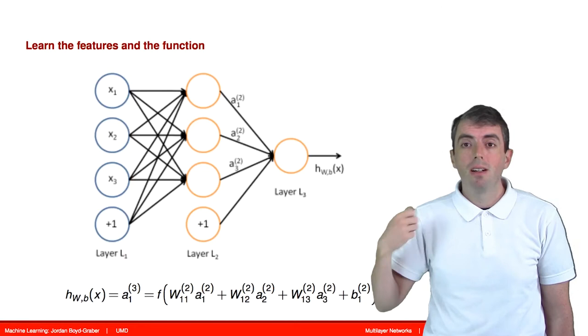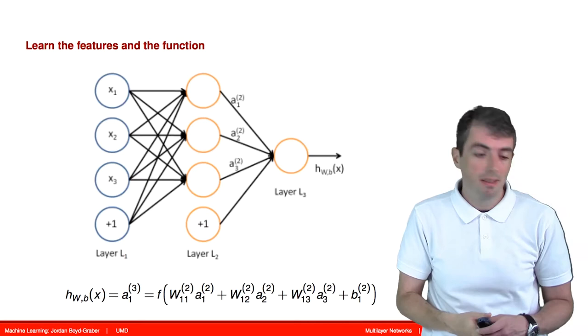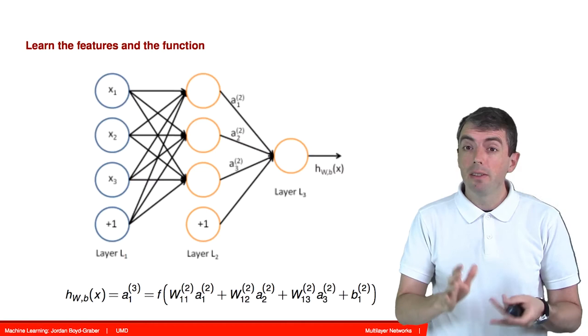Now you have basically created a logistic regression problem with features that you're learning from the input. Those features are learned through activations of the raw input, which themselves look like logistic regression.